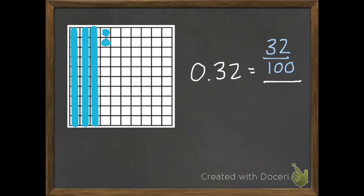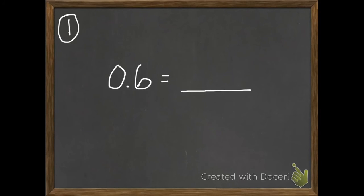Okay, here's your four problems. Once again, you do need to draw the picture. It is part of the instructions. I know it takes a little bit of time, but that's okay. So, the instructions are to make a model, and then write the decimal as a fraction.